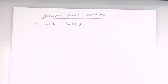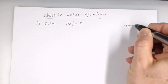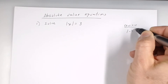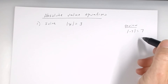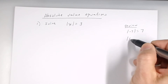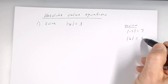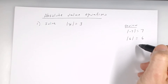Suppose I had the absolute value of x equal 3. Remember, you take the absolute value of x. Now, what's the absolute value of negative 7? Positive 7 — without the absolute value bars. What's the absolute value of 6? 6. The absolute value of a number is always positive, right?